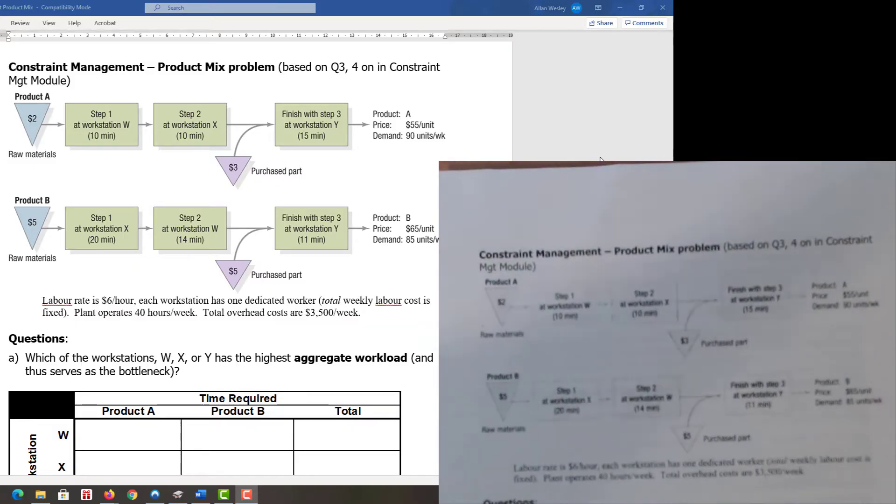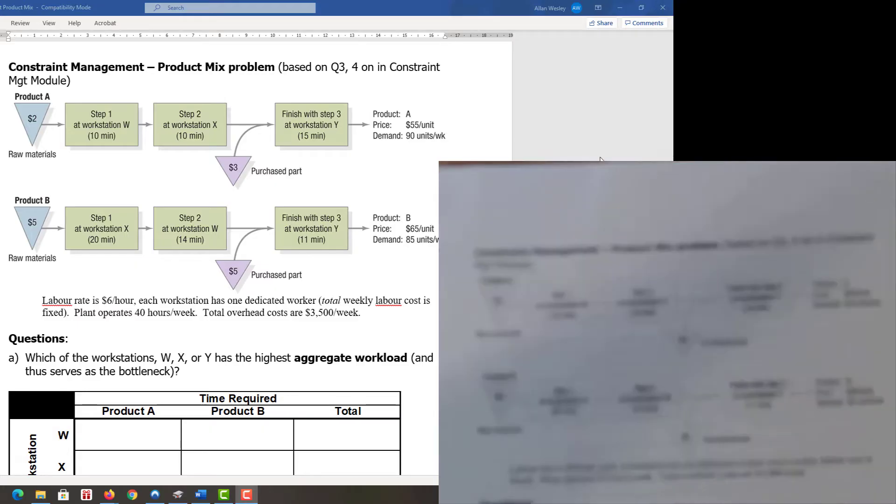Labor costs are a bit dated in this example. We have one dedicated worker and weekly labor costs are considered fixed. The plant operates 40 hours per week and total overhead costs are 3,500 dollars per week.